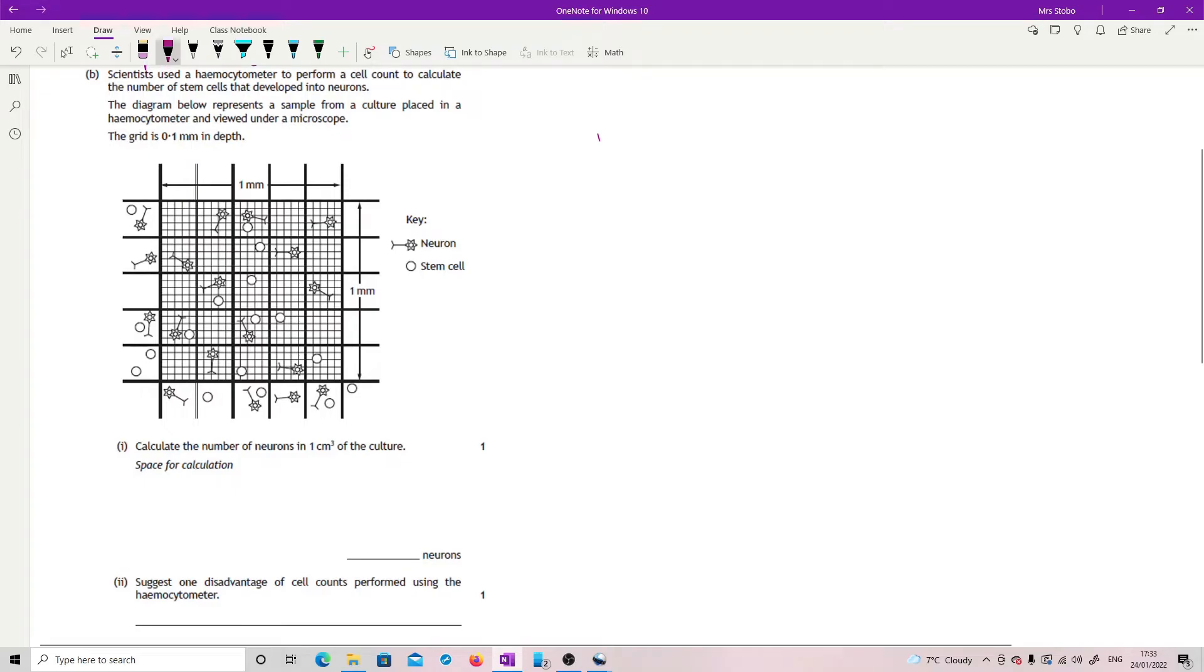Scientists used a hemocytometer to perform a cell count to calculate the number of stem cells that developed into neurons. A diagram below represents a sample from a culture placed in a hemocytometer and viewed under a microscope. The grid is 0.1 millimeters in depth. Calculate the number of neurons in one centimeter cubed. So basically we've got to do an awful lot of multiplying up here. So start with, let's get our base count of neurons.